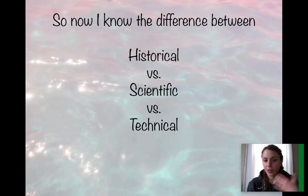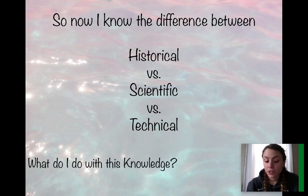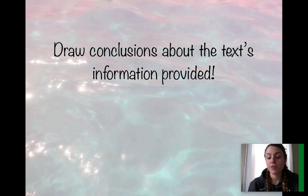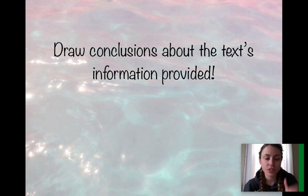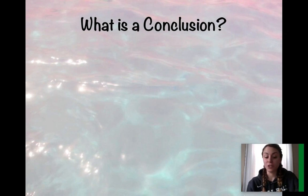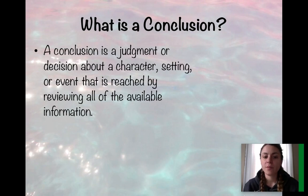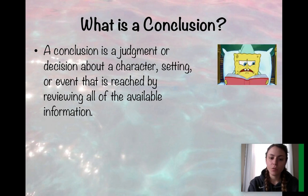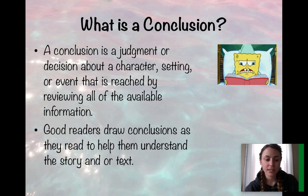Now that we know the difference between historical, scientific, and technical texts, what do we do with this knowledge? We draw conclusions about the information provided and apply them to the questions presented, the short response given, or the essay asked. We cannot draw conclusions unless we know whether it's scientific, technical, or historical, because that really helps us figure out and better understand the text. A conclusion is a judgment or decision about a character, setting, or event that is reached by reviewing all of the available information. Once you've reviewed all the available information, you can come up with a conclusion that is also supported in the text. Good readers draw conclusions as they read to help them understand the text.